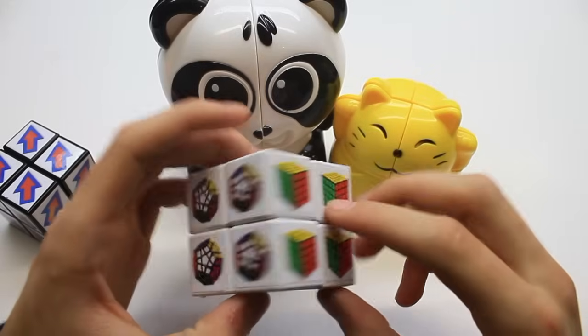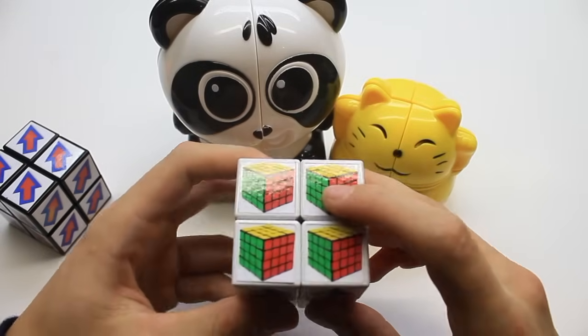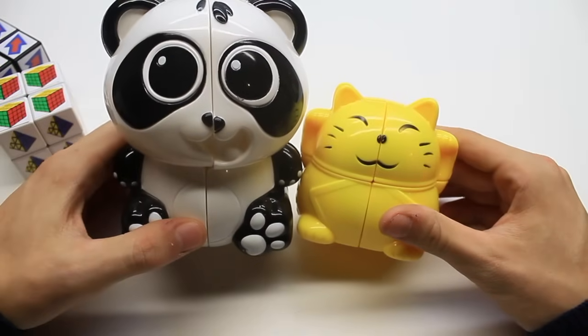So we have 3x3 mirror cube, Pyraminx, 5x5, Megaminx, and 4x4.